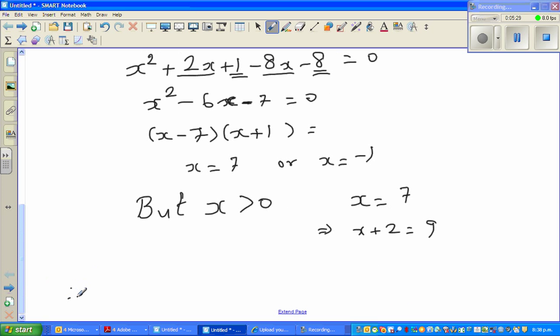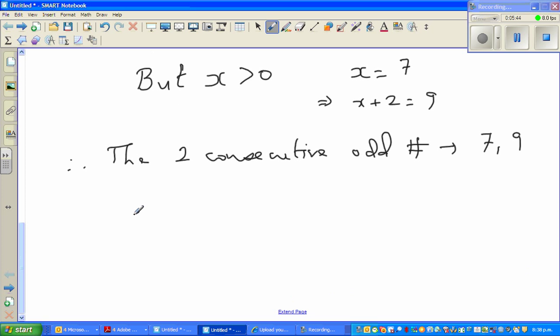Therefore, the two consecutive odd numbers are 7 and 9. So let us check the answer. What is the product of this? The product is 7 times 9, which is 63.